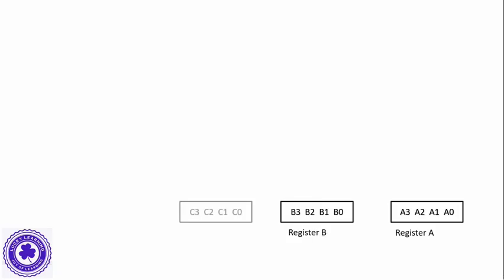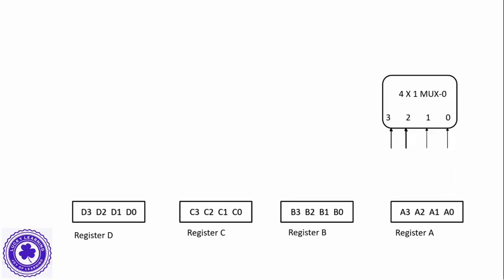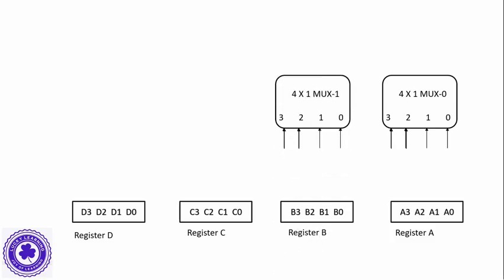Register A has four bits A0, A1, A2, A3; register B has four bits B0, B1, B2, B3; register C has four bits C0, C1, C2, C3; and similarly register D with four bits. We need to select one of these four registers and place its data onto the common bus. To do this we use a 4-by-1 multiplexer for each bit position.